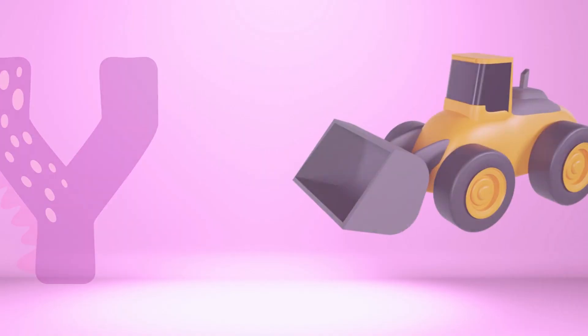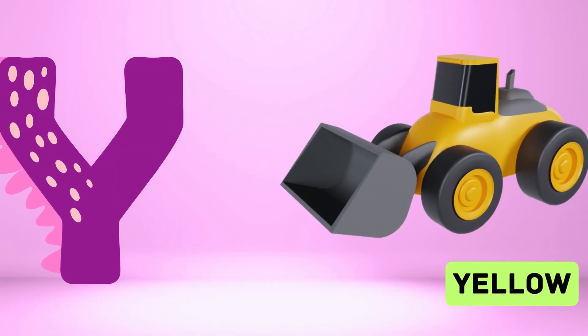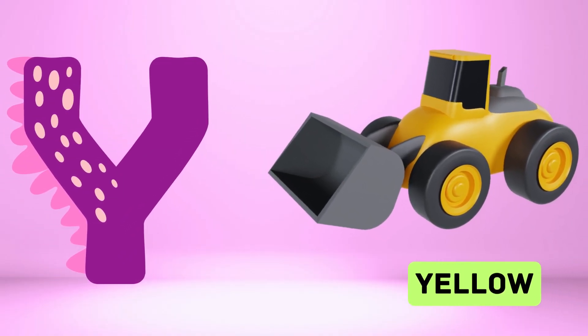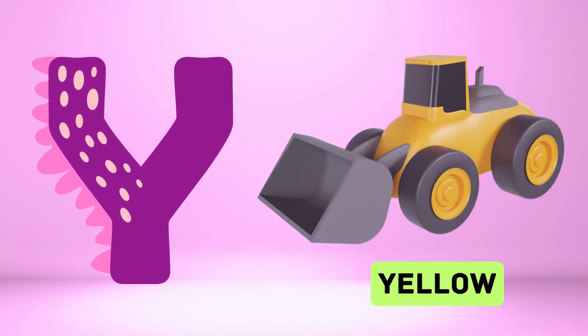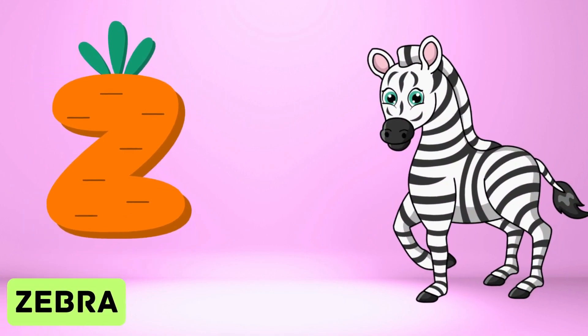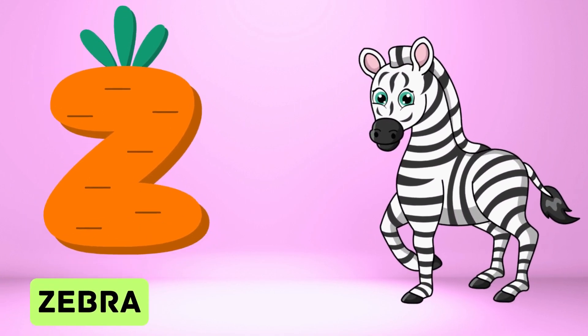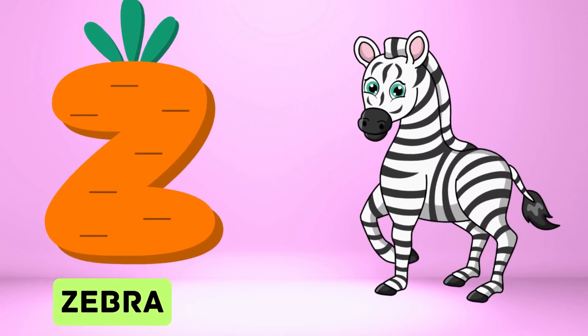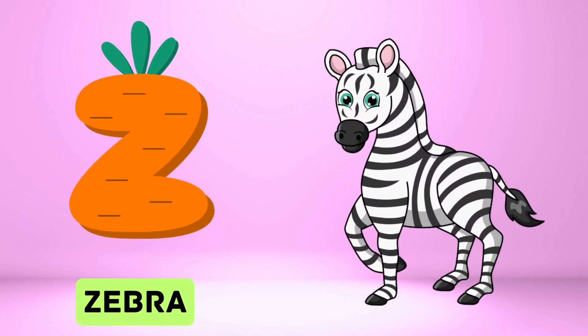Y is for yellow, ye-ye-yellow. Z is for zebra, z-z-zebra.